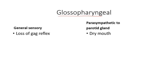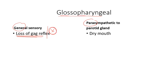The next cranial nerve is the glossopharyngeal nerve, which has two clinically important components: the general sensory component and the parasympathetic component. The sensory supply covers the posterior pharynx up to the epiglottis area, including taste sensation. Loss of the gag reflex is a combined loss involving both CN IX and CN X (vagus nerve). For the parasympathetic component, it supplies the parotid gland, so damage leads to dry mouth.